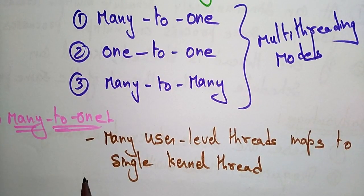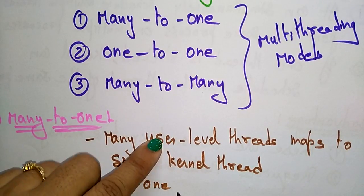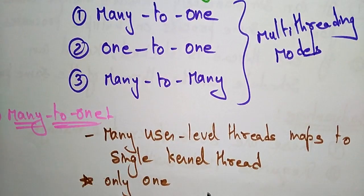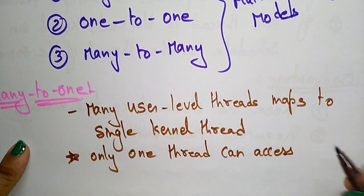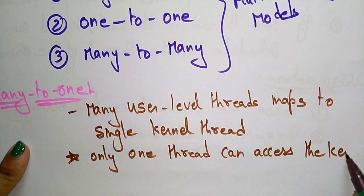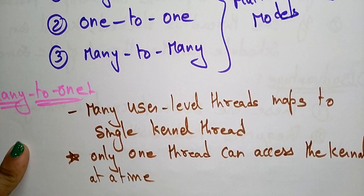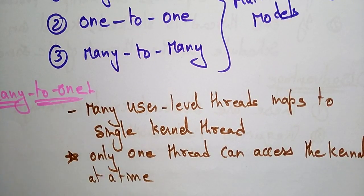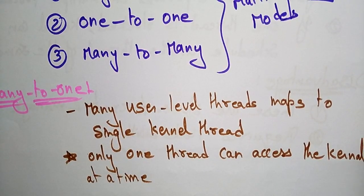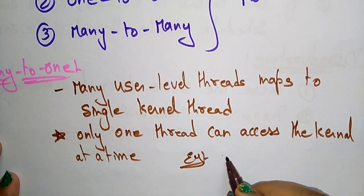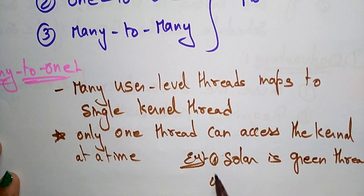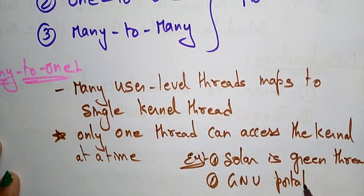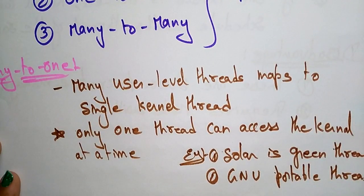Here, only one thread can access the kernel at a time. Even though there are many user-level threads, only one thread can access the kernel at a time. Multiple threads are unable to run in parallel on a multi-processor. Examples for many-to-one are Solaris Green Threads and GNU Portable Thread.